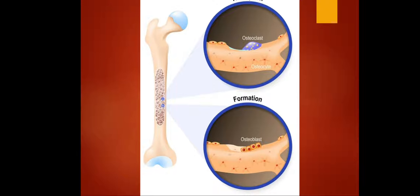Let's define osteoclasts. Osteoclasts refers to the large multinucleated cell responsible for the dissolution and absorption of bone. Osteoclasts can be formed by the fusion of many cells derived from circulating monocytes in the blood. This is very different from osteoblasts, which pertains to the bone cells that are developing and growing, while osteoclasts are responsible for dissolution and absorption of bone.